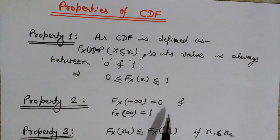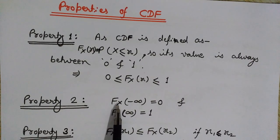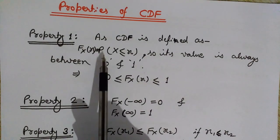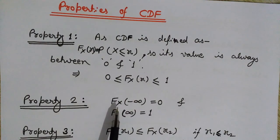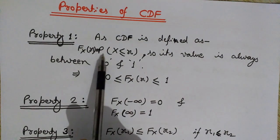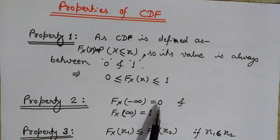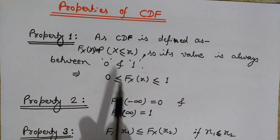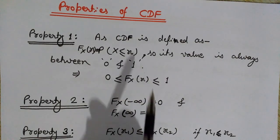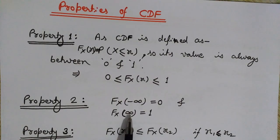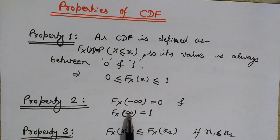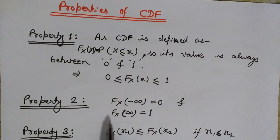Property two tells us when its value is zero and when its value is one. F(−∞) = 0 and F(∞) = 1. This is because the probability that X is less than or equal to minus infinity is zero — nothing can be smaller than minus infinity. And the probability that X is less than infinity is one, because it is certain that X will be less than infinity.